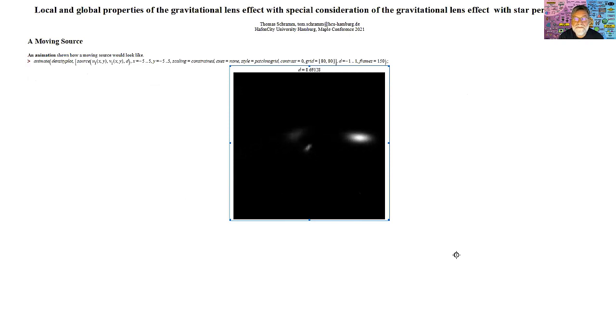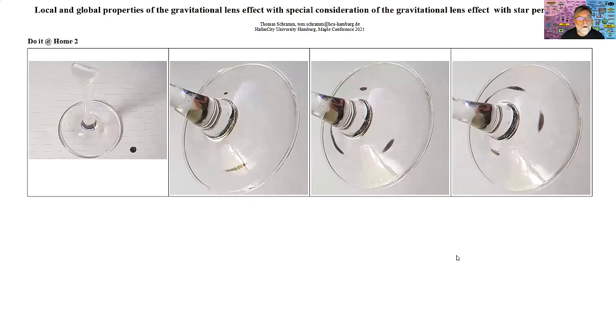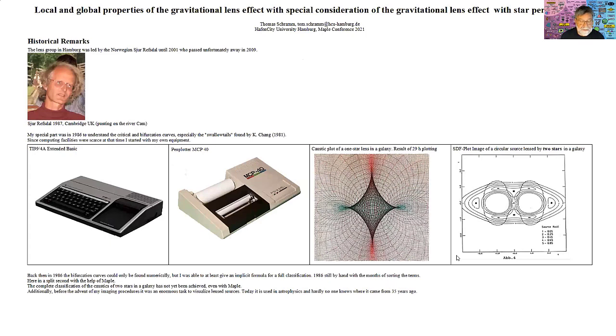We see first one image, then up to four occurring and again merging, and in the end we have just one normal image. You can do this also at home — looking through a wine glass you can identify two, three, or even four images.